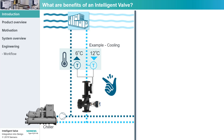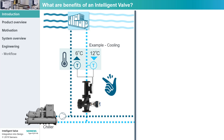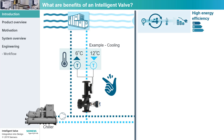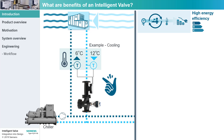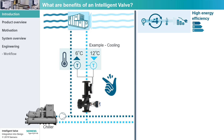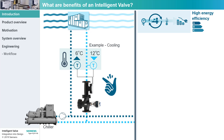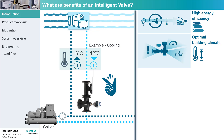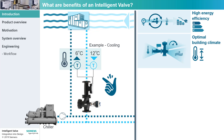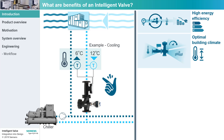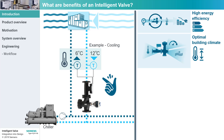The Intelligent Valve optimizes the energy efficiency as it did on the first day. This means significant energy cost savings with no additional effort. It compensates the dynamic pressure fluctuations in the hydraulic system and keeps the room temperature constant.